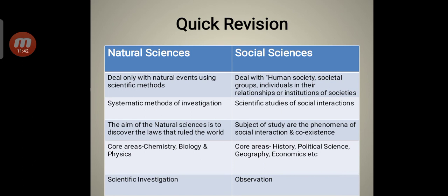Now we come to the distinction between natural sciences and social sciences. Let's have a quick revision once again. Natural sciences deal only with natural events using scientific methods. Social sciences deal with human society, societal groups, individuals in their relationships or institutions of societies. Natural sciences use systematic methods of investigation while social sciences conduct scientific studies of social interactions. The aim of the natural sciences is to discover the laws that ruled the world and social sciences' subject of study are the phenomena of social interaction and coexistence. The core areas are chemistry, biology and physics for natural sciences and the core areas of social sciences are history, political science, geography, economics, etc. Lastly, scientific investigation is the method for natural sciences and observation for social sciences.